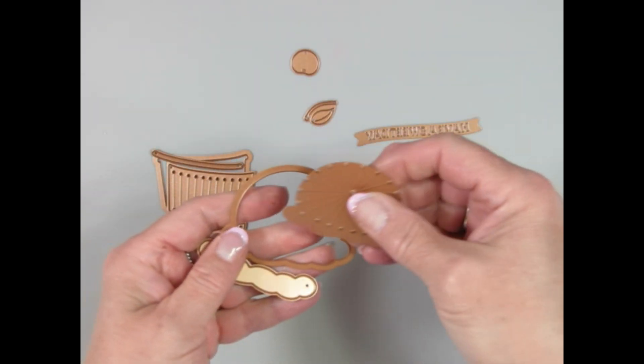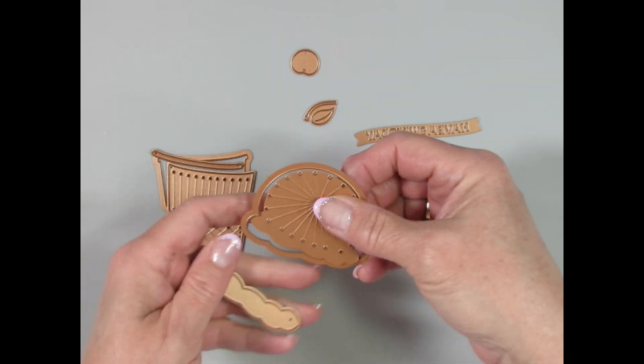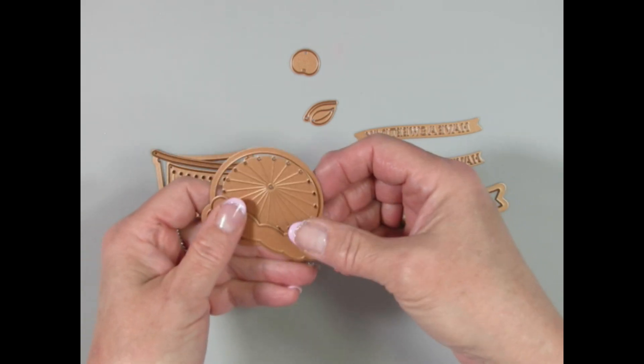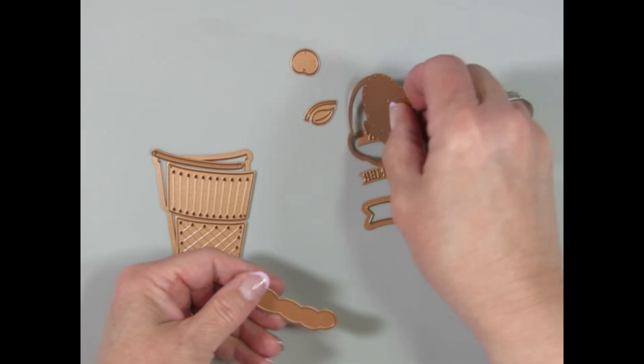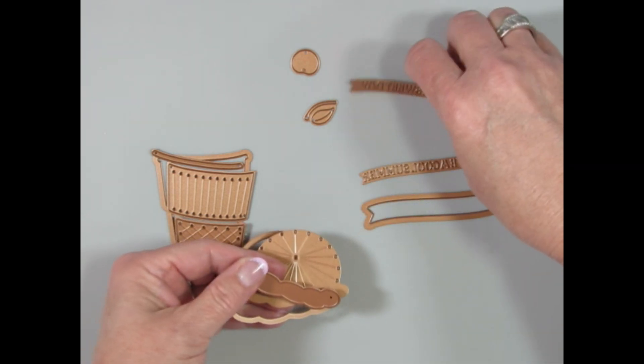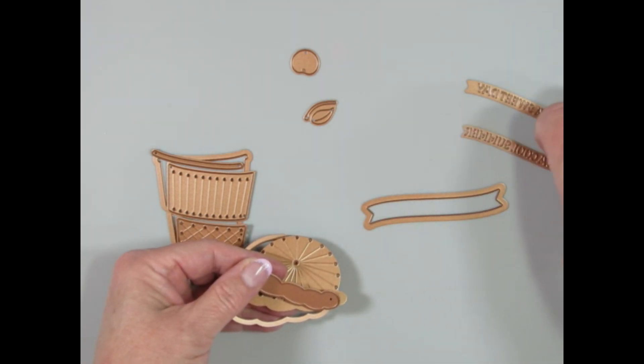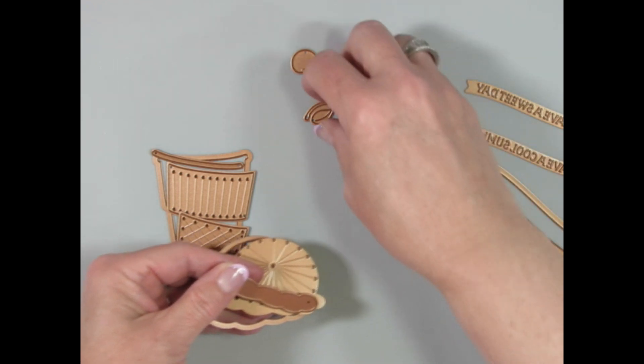There are three dies for the ice cream, the scoop, and then the little ice cream accent piece, whether that be whipped cream or just another layer of ice cream, whatever you want to make it.